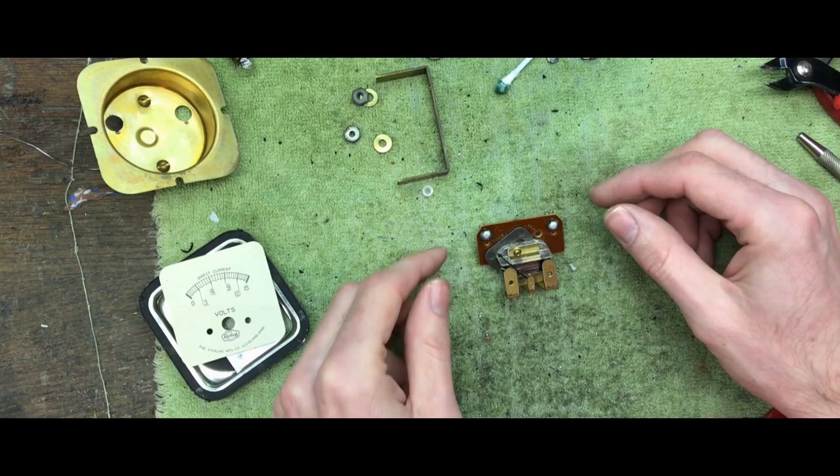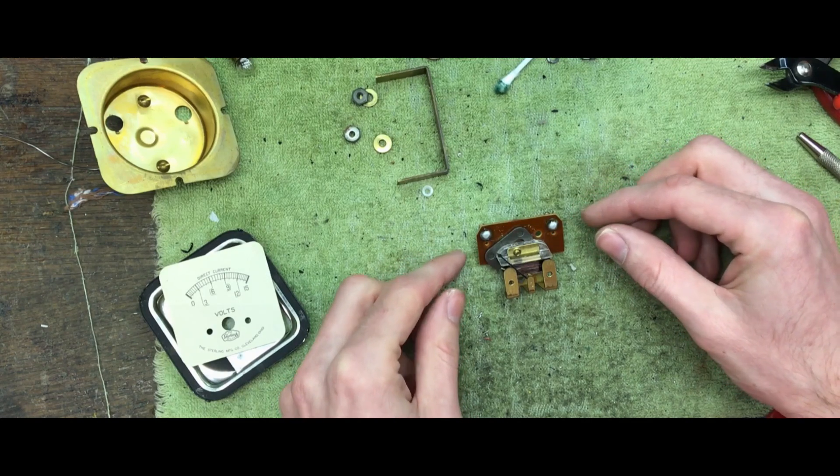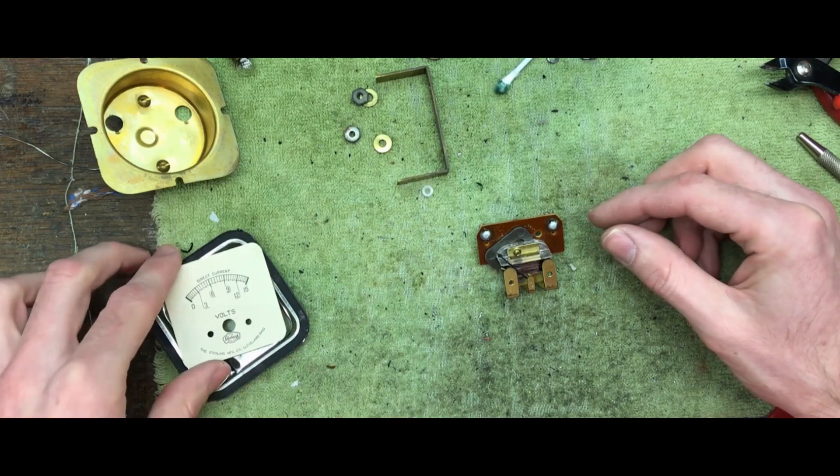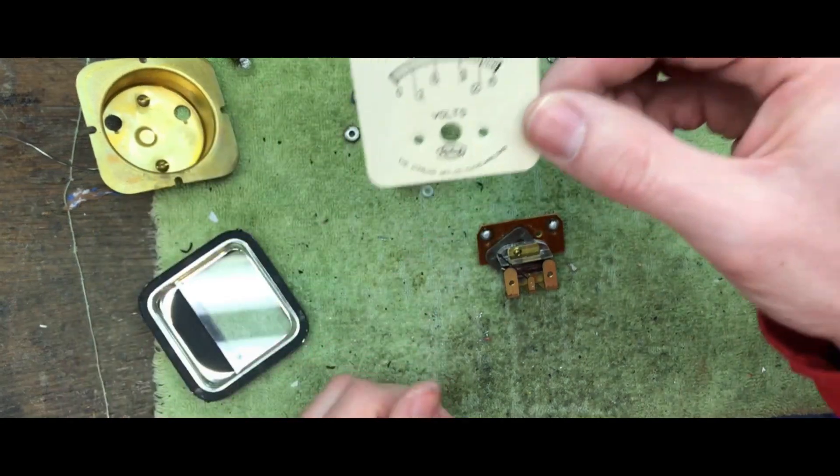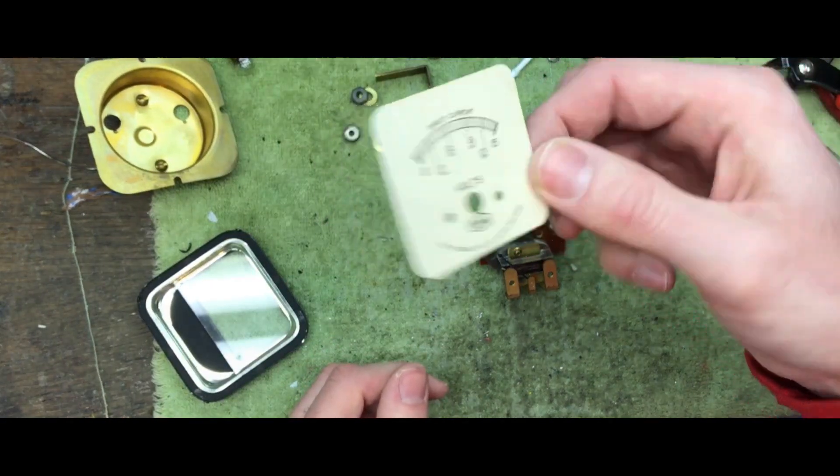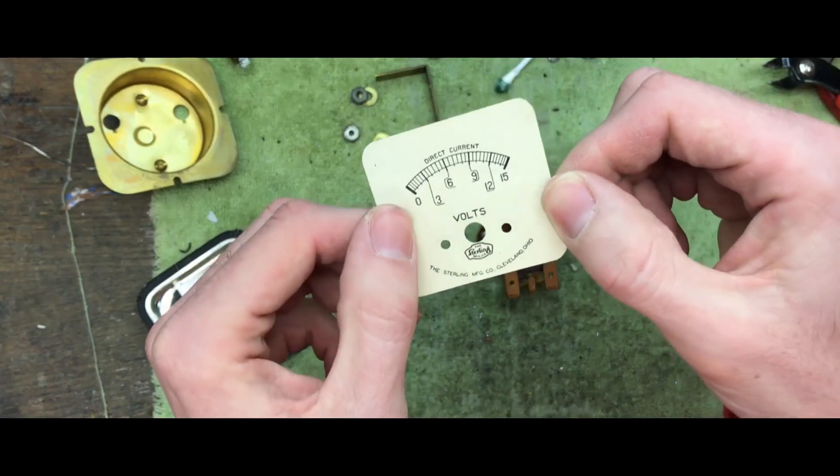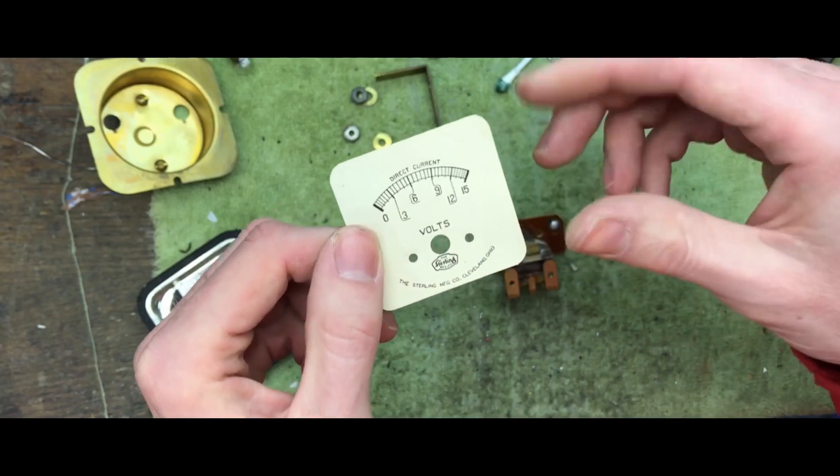So I had to do a minor repair to this volt meter in case you've never seen the inside of an analog voltage meter. This is the scale card so this tells you this meter measures 0 to 15 volts DC.